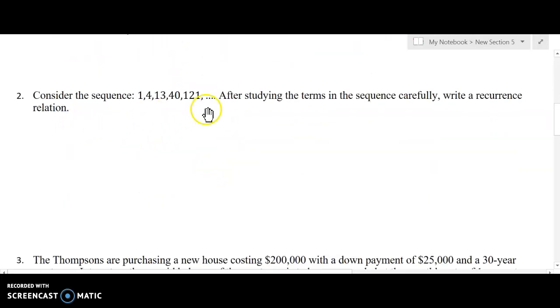Oftentimes we have a sequence and we want to write a recursive function for it. So if we look at this one where the terms in the sequence are 1, 4, 13, 40, and 121, I want to study this and see how is the next term generated from the previous term. So I encourage you to stop the video and think about this for a little while. I can see that the spacing between them is not consistent. So here from 1 to 4, that's a change of 3, but then the next change is 9, and then 27.